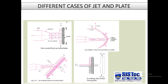For the inclined plate, force has two components: a horizontal component Fx = Fn·cos(90° − θ) = Fn·sinθ, and a vertical component Fy = Fn·sin(90° − θ) = Fn·cosθ, where Fn is the normal force acting perpendicular to the plate.